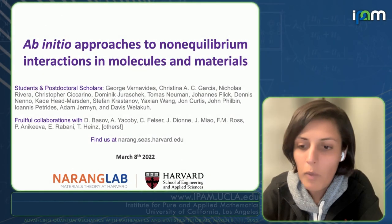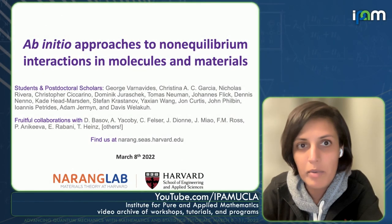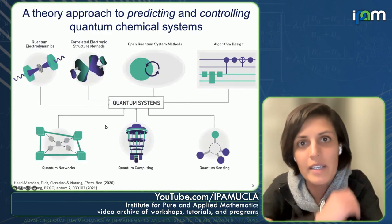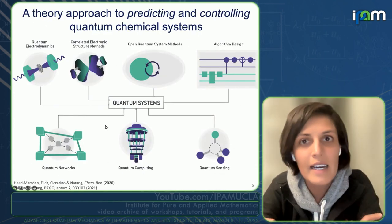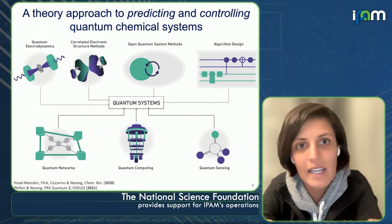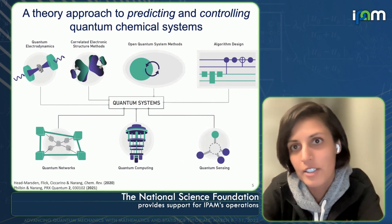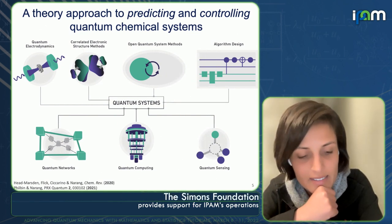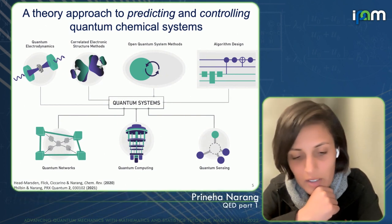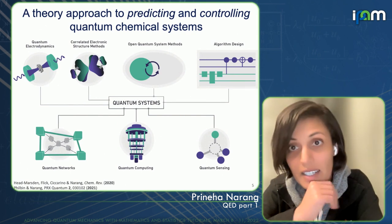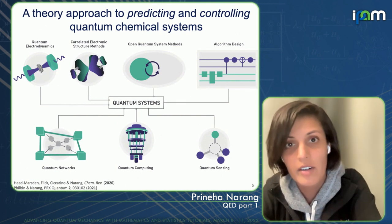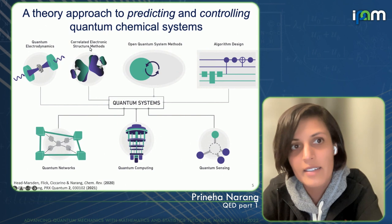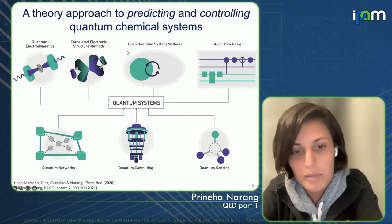One of the things we've been really thinking about here in the group is how we can actually combine both quantum electrodynamics and correlated electronic structure theory methods to actually predict these light-matter states — how we can actually do this in a way that is scalable and also impactful. That's going to be the bulk of what my talk here will cover.